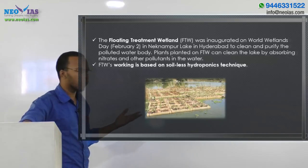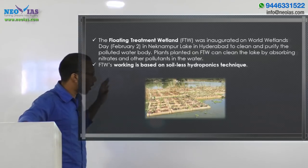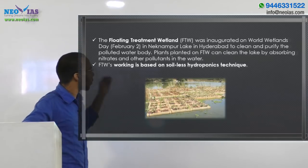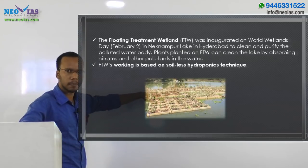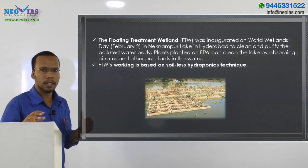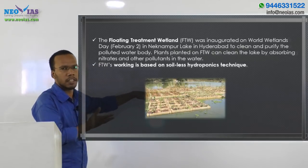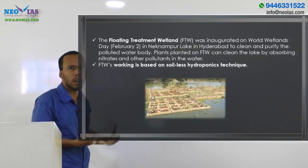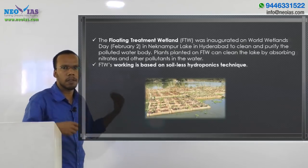Water bodies are ingressed with nitrates mainly due to the surface runoff of water, contaminating the wetlands with nitrates and other pollutants. These nitrates can be absorbed by the plants growing on the floating treatment wetland. The floating vegetation treats the water by using these plants, which absorb the nitrates and pollutants from the water body.